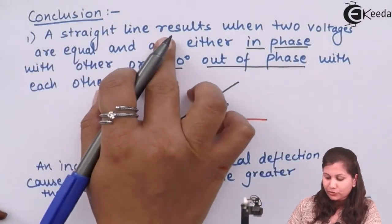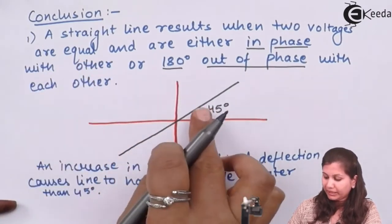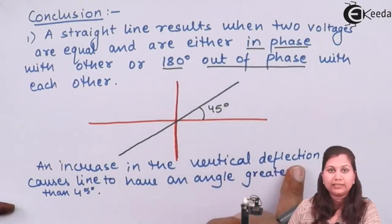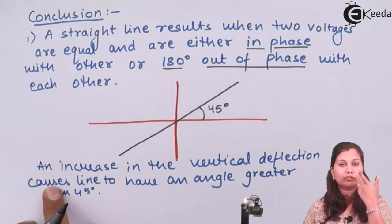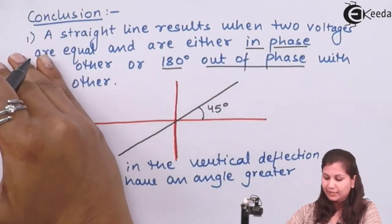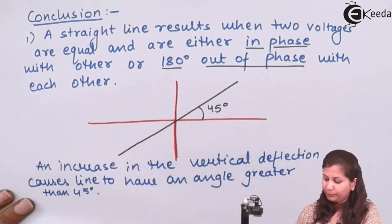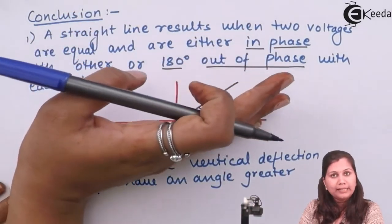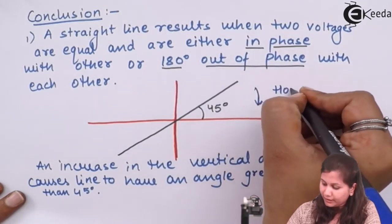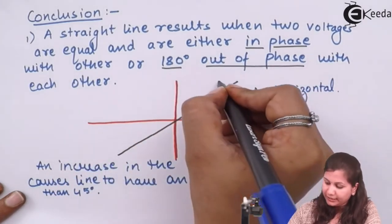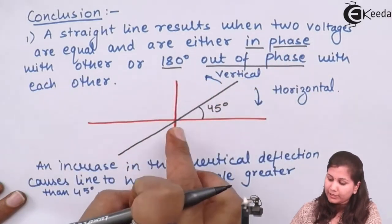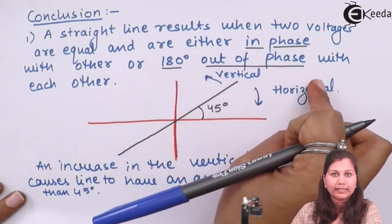The straight line appears when the two voltages are equal, making a 45 degree angle with the horizontal. If we increase the vertical deflection voltage, the line moves in the anti-clockwise direction and the angle increases beyond 45 degrees. If we increase the horizontal deflection voltage, it moves clockwise and the angle becomes less than 45 degrees. But it will remain a straight line because the two signals are in phase or 180 degrees out of phase.